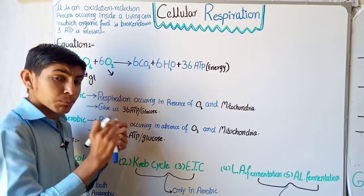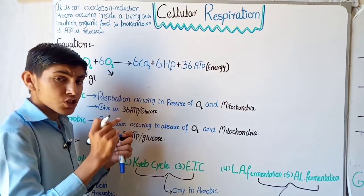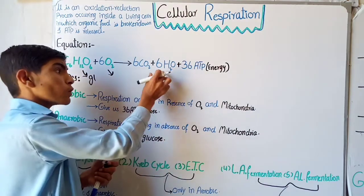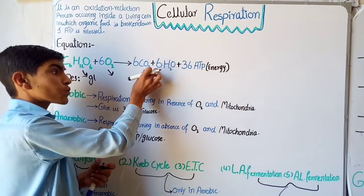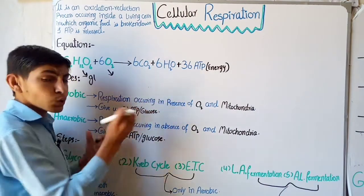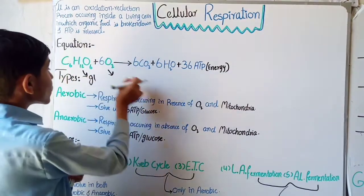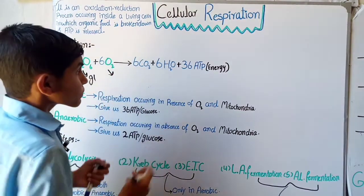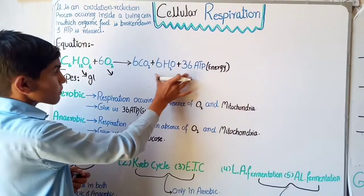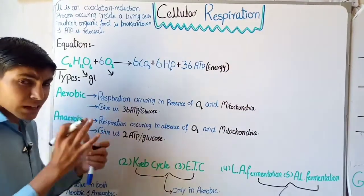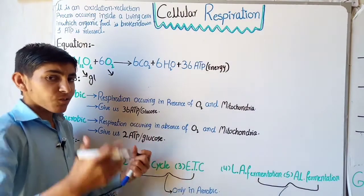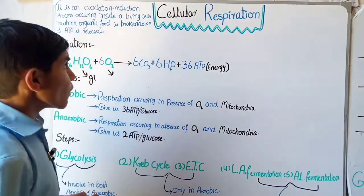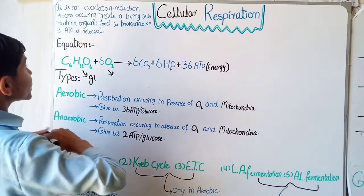These two products then go back to the plant, and in the plant the process of photosynthesis occurs again in which these products are used and give back glucose and oxygen. So cellular respiration is a process which is completely opposite to the process of photosynthesis.